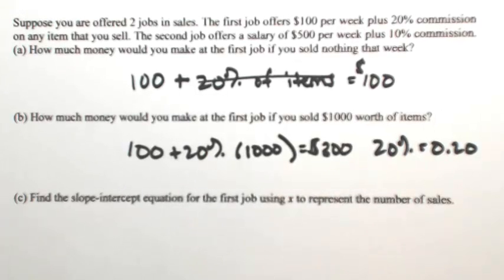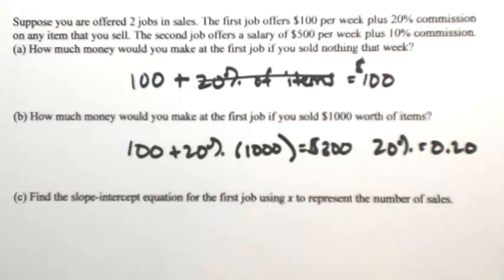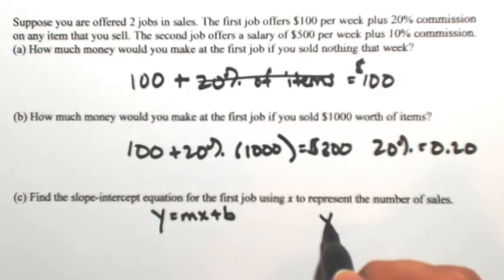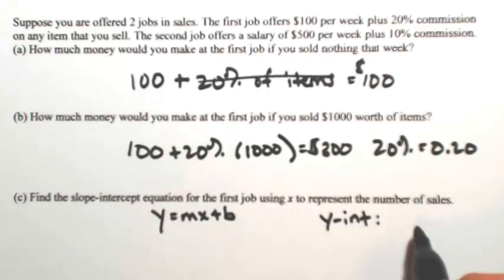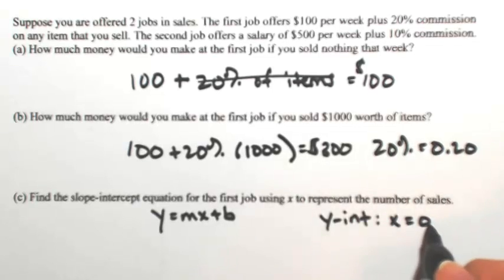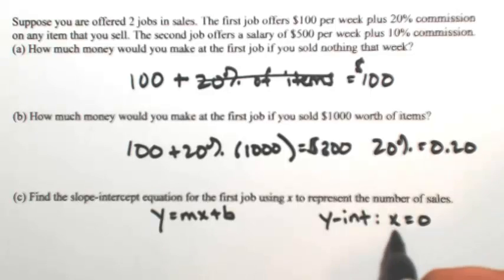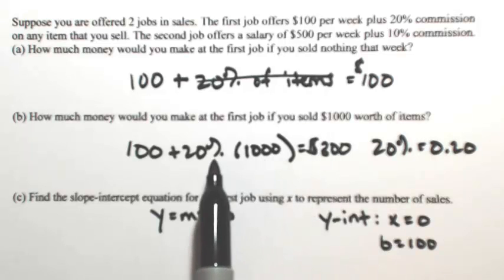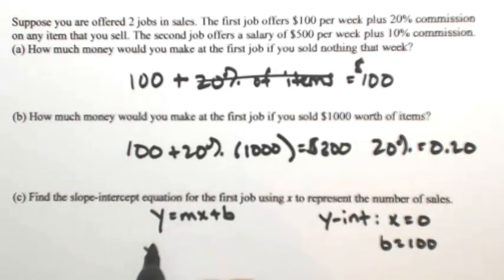Let's generalize this. Let's find the slope-intercept equation for the first job, where x represents the number of sales. In slope-intercept form: y = mx + b. The y-intercept is when x equals 0 — in other words, when you sell nothing. So when we sold nothing our y-intercept was $100, meaning b = 100. The commission rate of 20% is your slope, so y = 0.20x + 100.